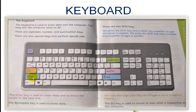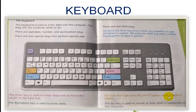There are two Shift keys — one is here and one is here. We press the Shift key and a letter key together to type the letter in capital. We press the Shift key and a number key together to type a symbol. We turn the Caps Lock key on to type a word in capital letters. This is the Caps Lock key.